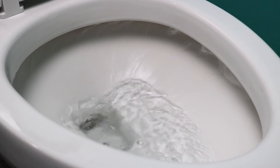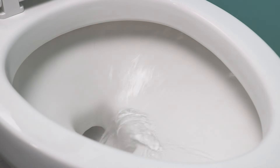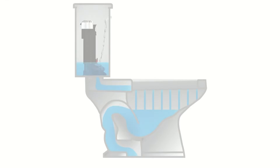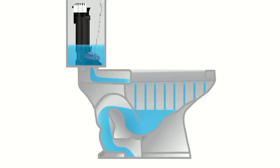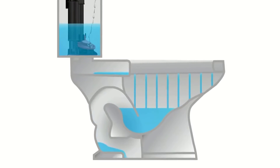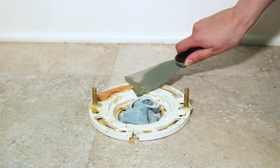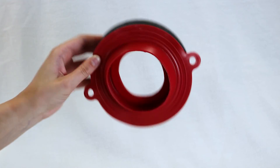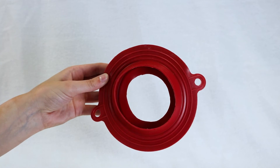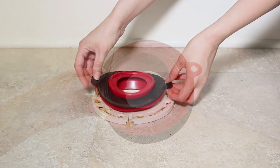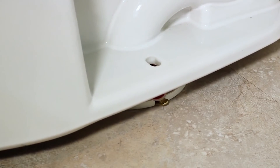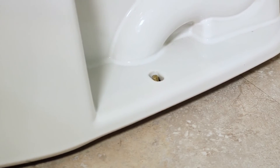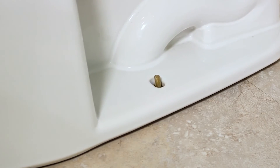When waste water is pushed out of the bowl, it passes through an outlet on the bottom of the bowl that empties into the floor drain. A seal, traditionally made with wax but now often made with rubber and foam, ensures that the waste water passes into the drain without leaking onto the floor.